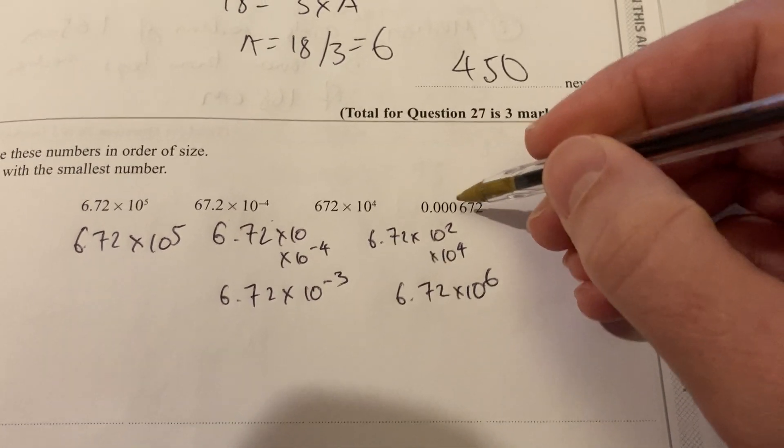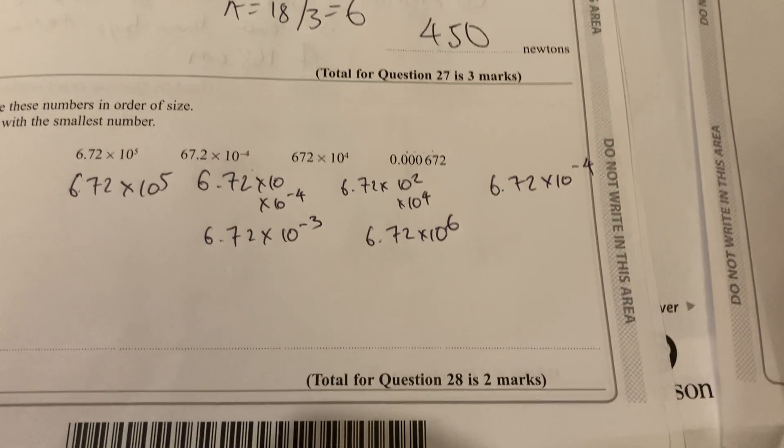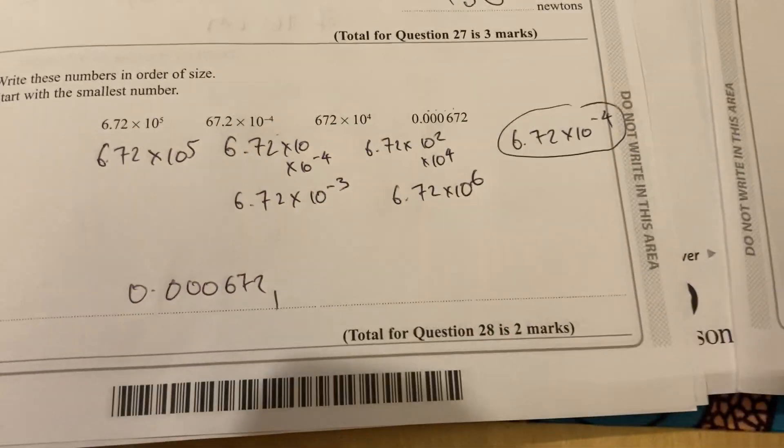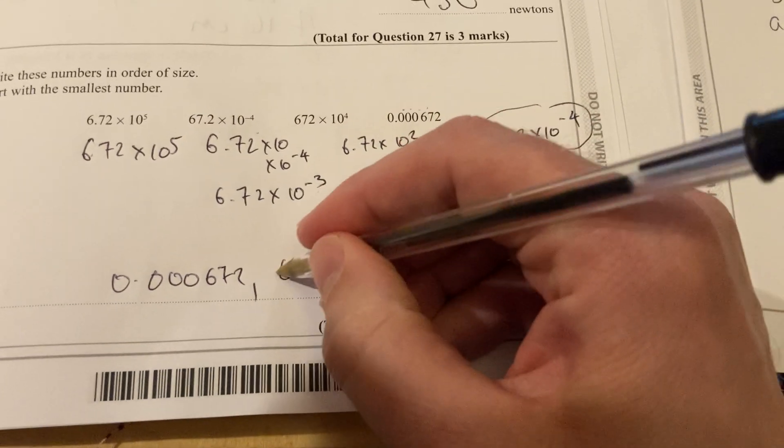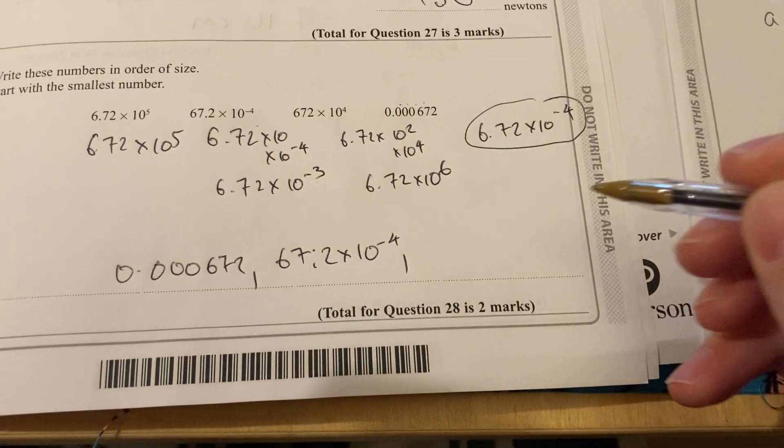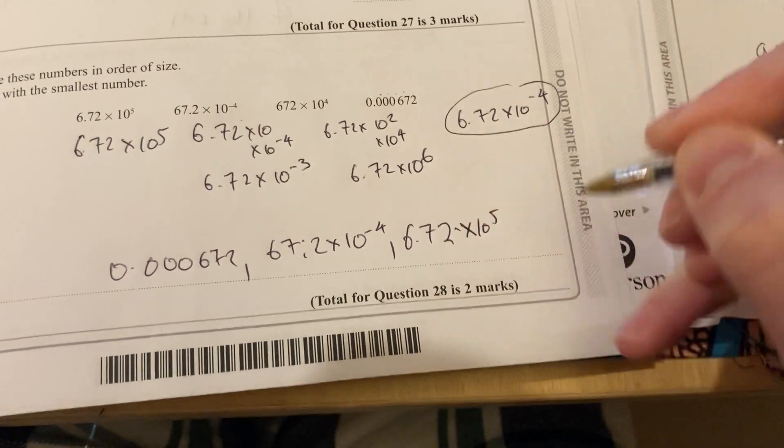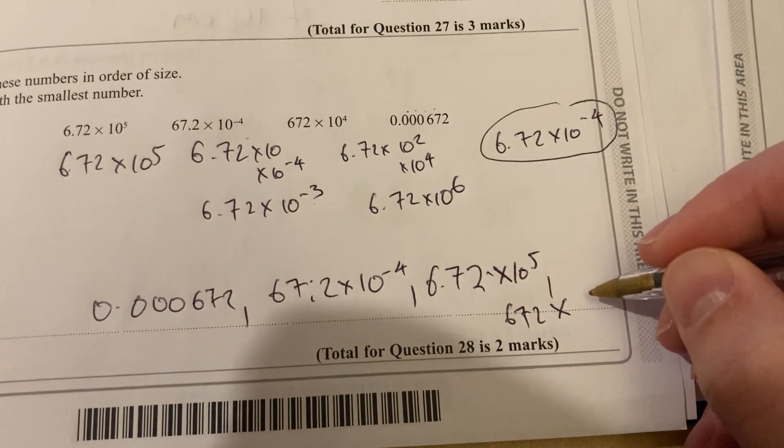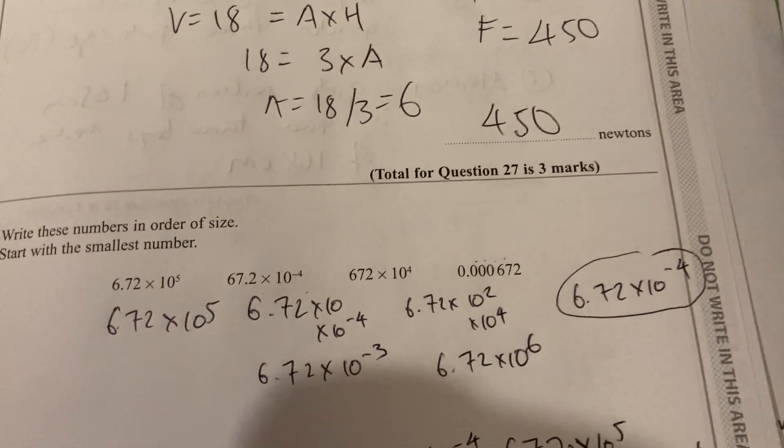And in this one here, I can see that I've moved the decimal place 1, 2, 3, 4. So 6.72 times 10 to the minus 4. So the smallest number in that case would be that one. So it would be 0.000672. The next smallest is the other negative, which is now 6.72 times 10 to the minus 3. But to order them, let's write them as they were originally there. 67.2 times 10 to the minus 4. Then this one here, which was in standard form, 6.72 times 10 to the 5. And then finally, 672 times 10 to the 4. Okay, and there we have finally finished that paper.